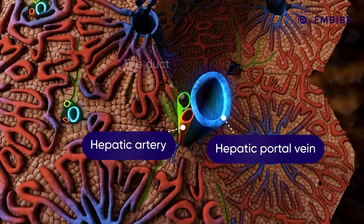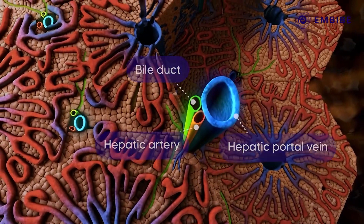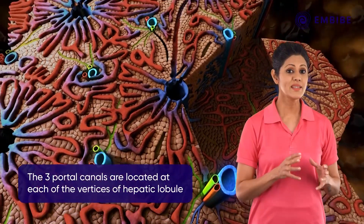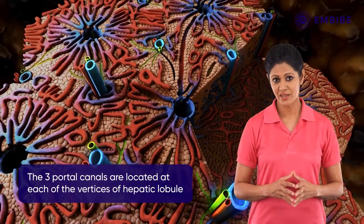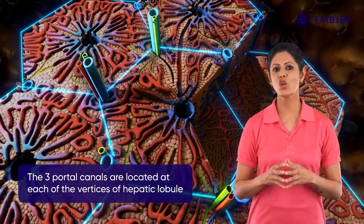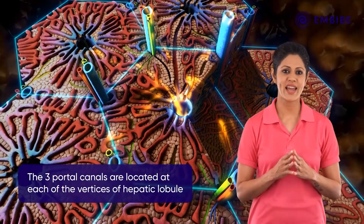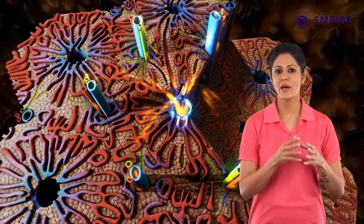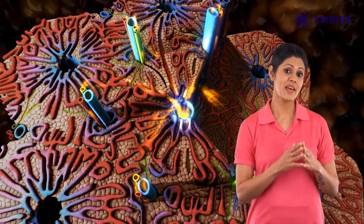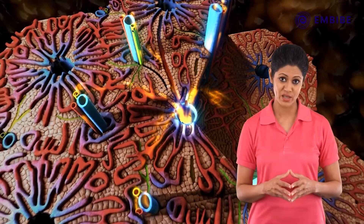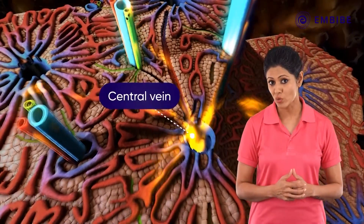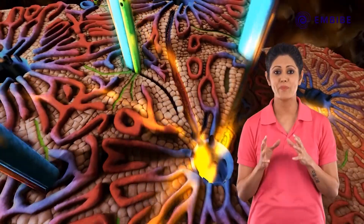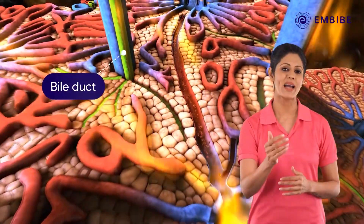These hepatocytes are arranged into lobules that are generally hexagonal structures having three portal canals — the hepatic artery, the hepatic portal vein, and the bile duct — situated at each corner of the hexagonal lobule. Blood from the hepatic portal vein and the hepatic artery is drained into the central vein, and bile leaves the liver through the bile duct.